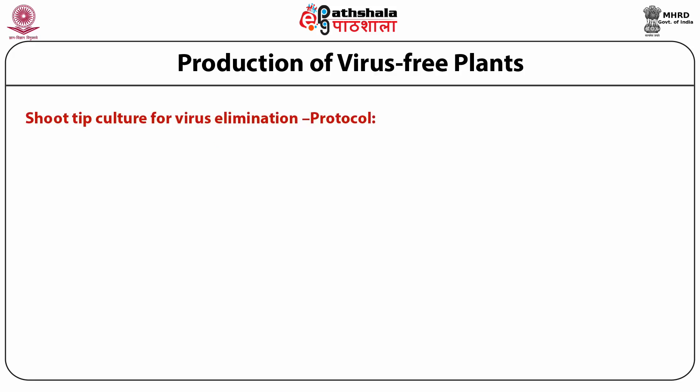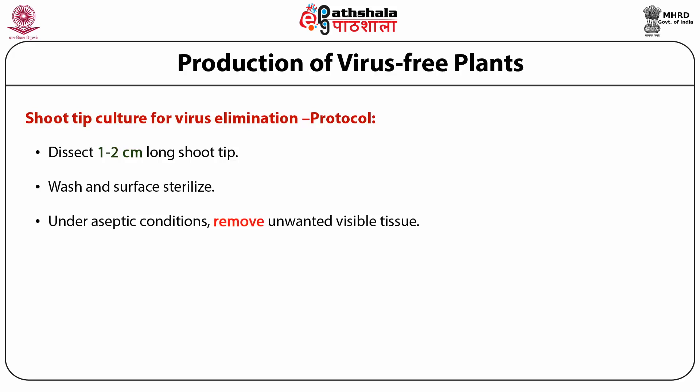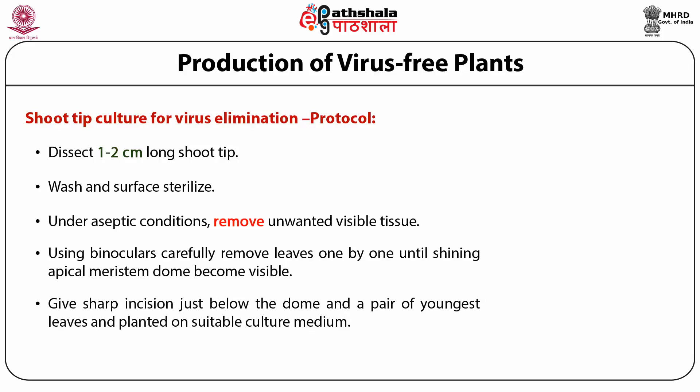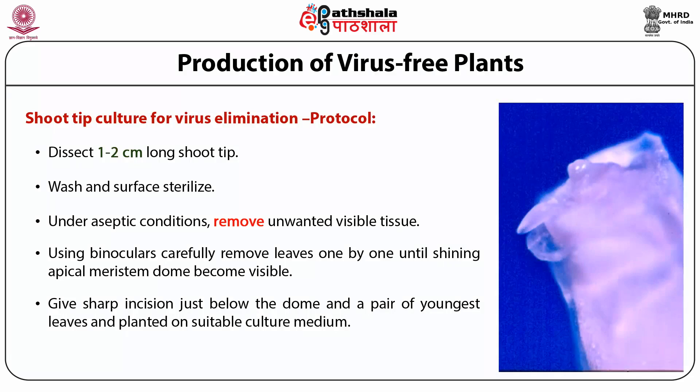The basic protocol for virus elimination by shoot tip culture is to take one to two centimeter long shoot tips from the infected plant, wash and surface sterilize, and take it to the airflow cabinet. Under aseptic conditions, remove unwanted visible tissue, then use a binocular and carefully remove leaves one by one until a shining apical meristem dome with about a couple of the youngest leaves becomes visible. At this stage, give a sharp incision below the dome with the pair of youngest leaves and transfer the shoot tip to a suitable culture medium.